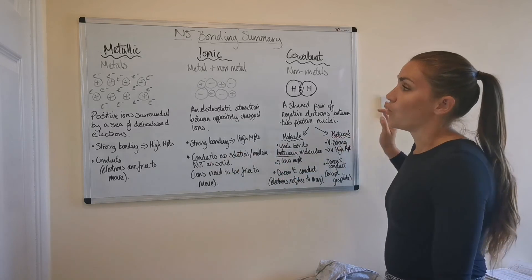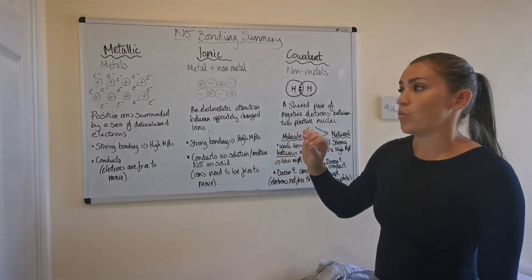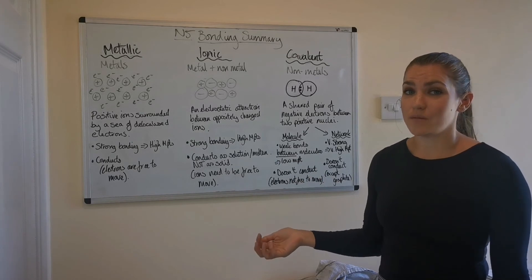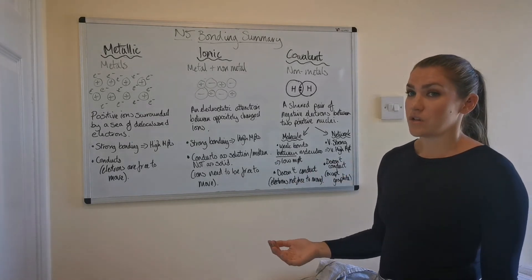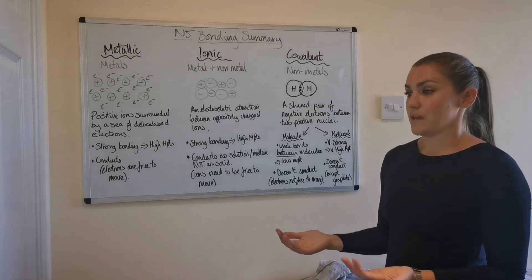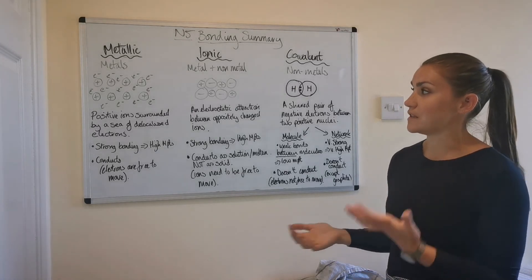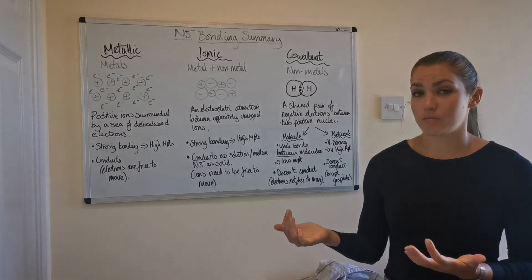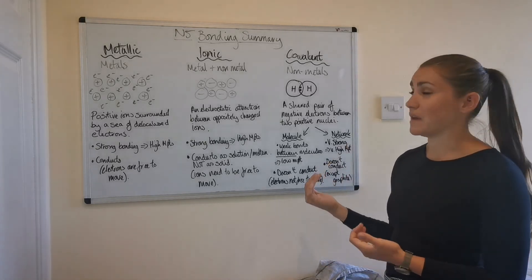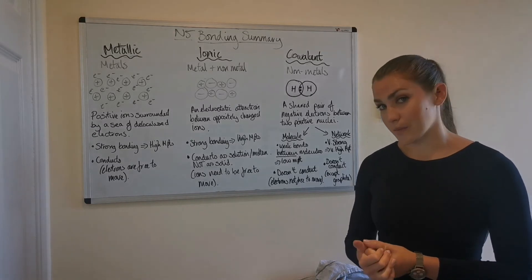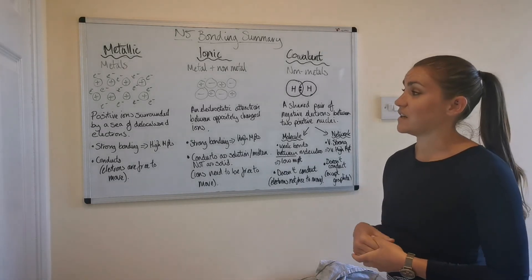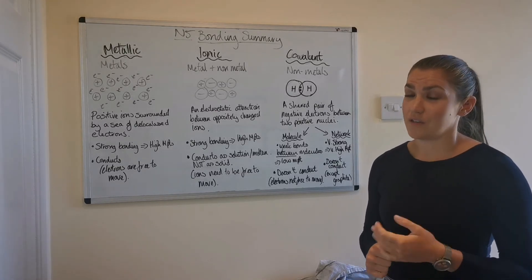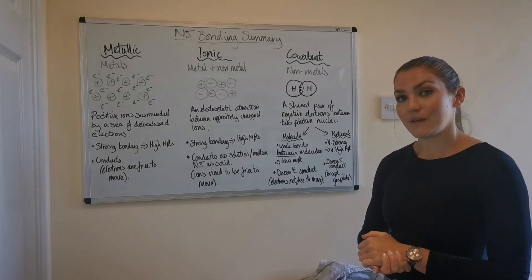So that's the general summary. If you're trying to identify what type of bonding is occurring, you just basically need to look at what the elements are that are in the compound. So is it all metals? Is there a metal and a non-metal? So if there's a metal and a non-metal, then it must be ionic bonding. If it's all metals, it's going to be metallic bonding. If it's all non-metal elements, then it's going to be covalent bonding. So it's really as easy as that when you're trying to identify the type of bonding that's present. You're really just looking at whether the elements are metals or non-metals.